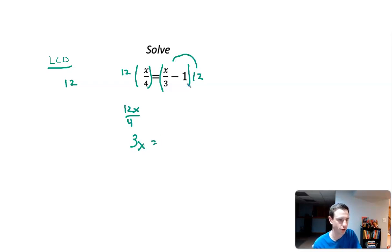Over here, we want to make sure we do 12 times x/3 and 12 times negative 1. So 12 times x/3 is 12x/3. 12 divided by 3 is 4x. And we have minus 1 times 12, which is minus 12.